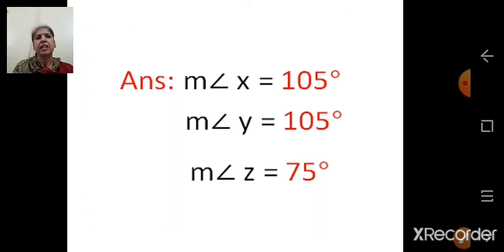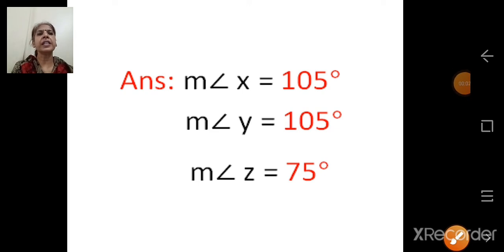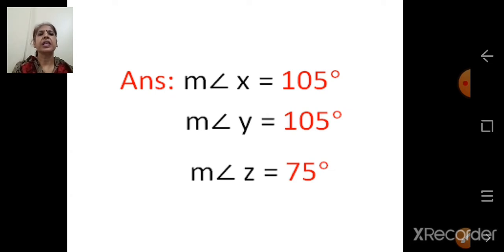So the answers are: measure of angle X = 105°, measure of angle Y = 105°, and measure of angle Z = 75°.